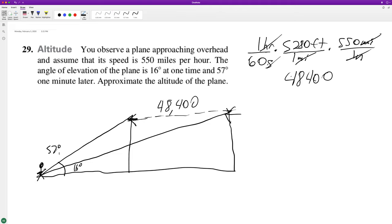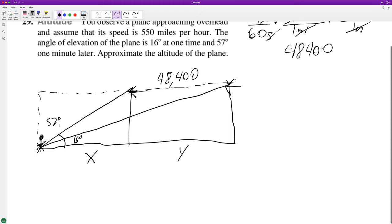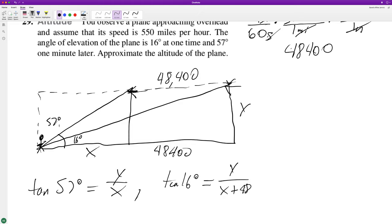This is x and this is y. We want to find the elevation, so tangent of 57 degrees equals y over x. We'll make this y. Then tangent of 16 degrees equals y over x plus 48,400. This is just setting up two equations, two unknowns, and I'm going to type this all in.